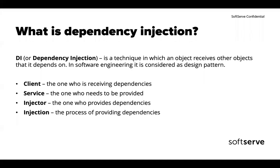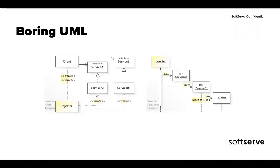The first entity is the client - the object that receives dependencies. For example, a car depends on wheels, so the car is the client and wheels are services because they provide the service for the car to move. The injector is the one that provides those dependencies - for example, the special mechanism in a factory that inserts wheels into the car. The injection is the process itself - the code, thread, or dependency graph that actually provides those dependencies.